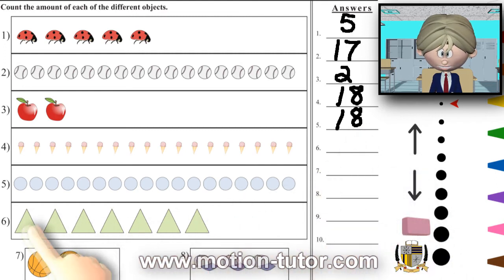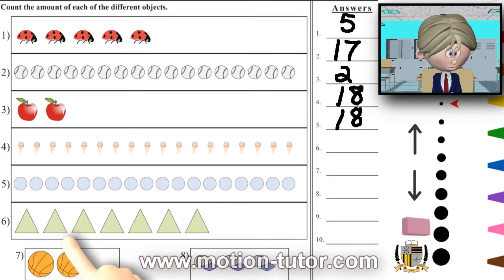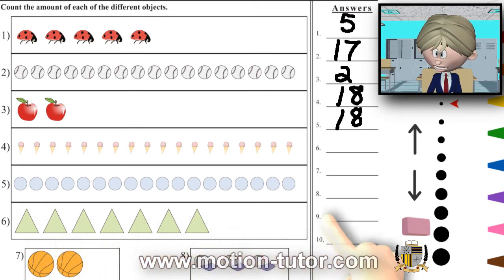And these triangles: one, two, three, four, five, six, seven. Seven triangles.